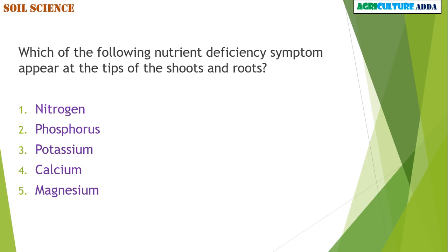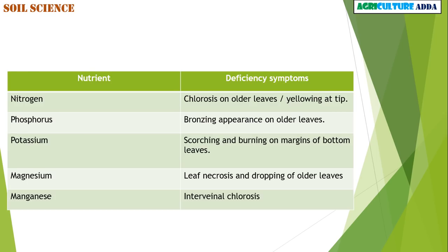Which of the following nutrient deficiency symptoms appear at the tips of shoots and roots — nitrogen, phosphorus, potassium, calcium, or magnesium? The answer is calcium. These are the major nutrients and their deficiency symptoms; it will be very useful for upcoming exams.